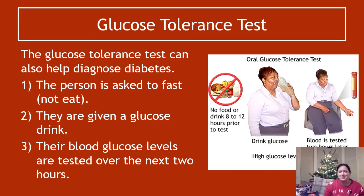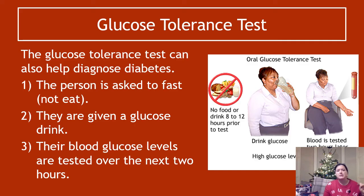The glucose tolerance test is another way to confirm a diagnosis aside from just a clinistix test. These three steps you need to know for an exam situation. First, the person is asked to fast for about a 12 to 24 hour period — so not to eat. Second, they are given a glucose drink — basically just a cup full of glucose in water. Then third, their blood glucose levels get tested over the next two hours.